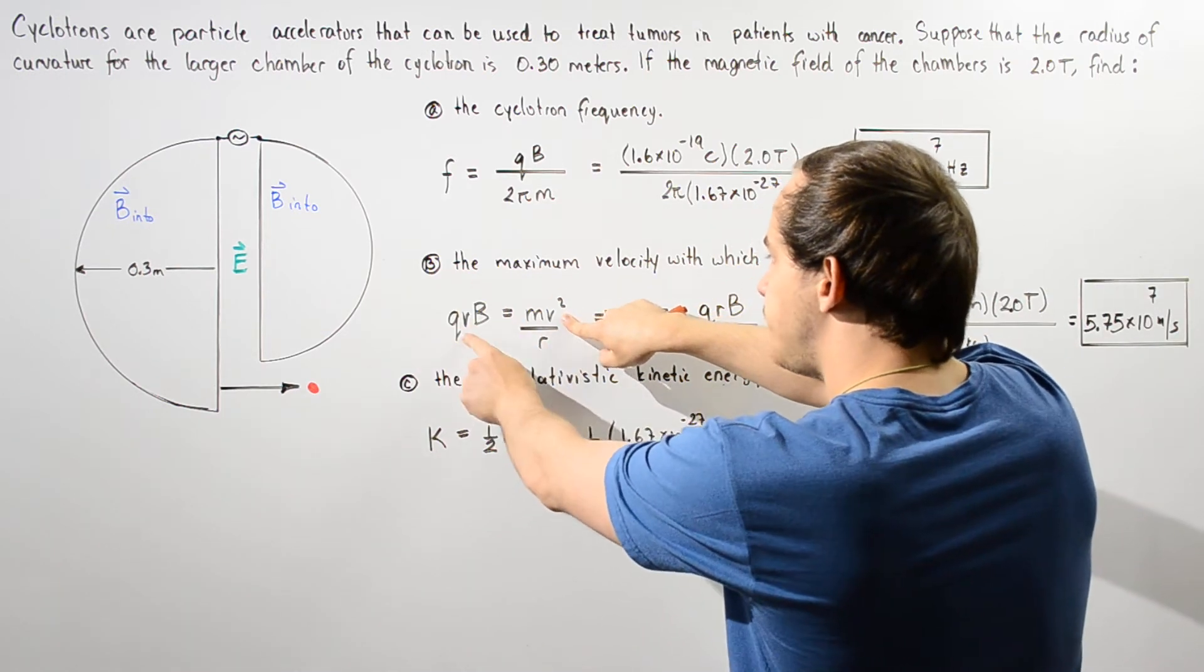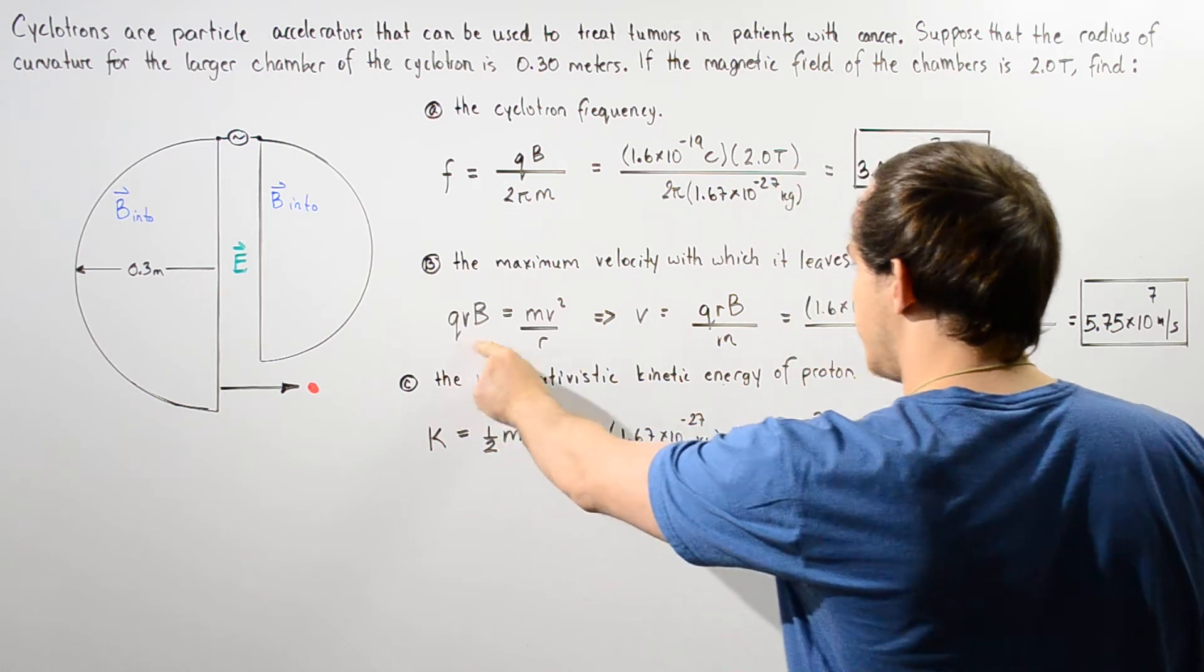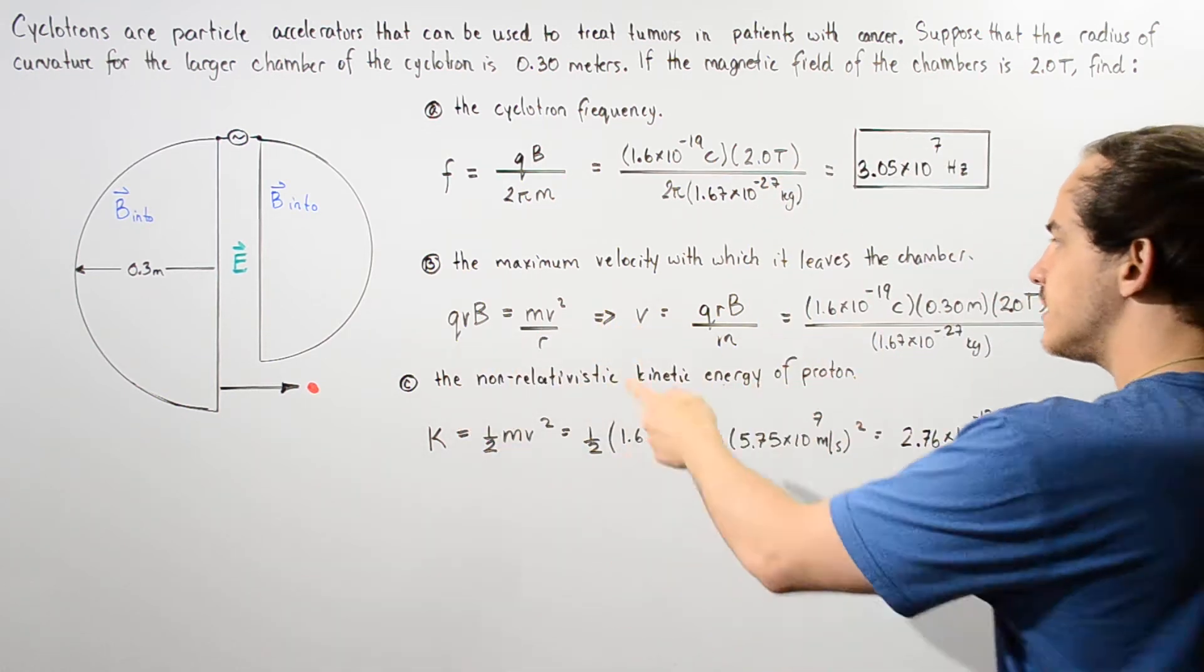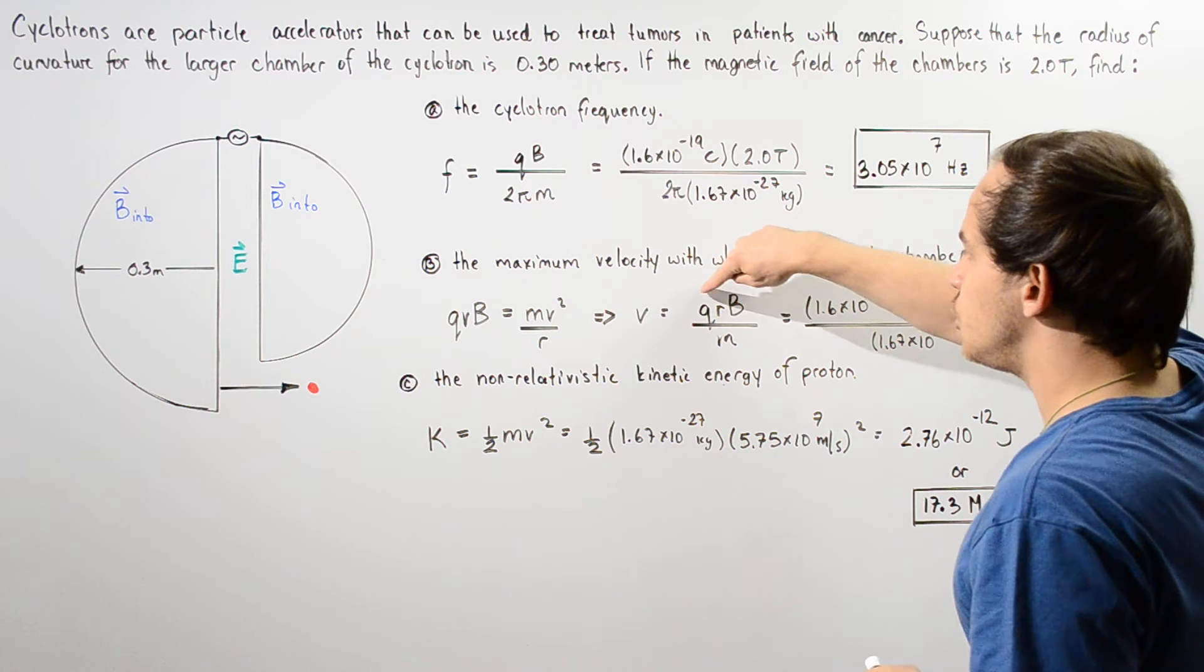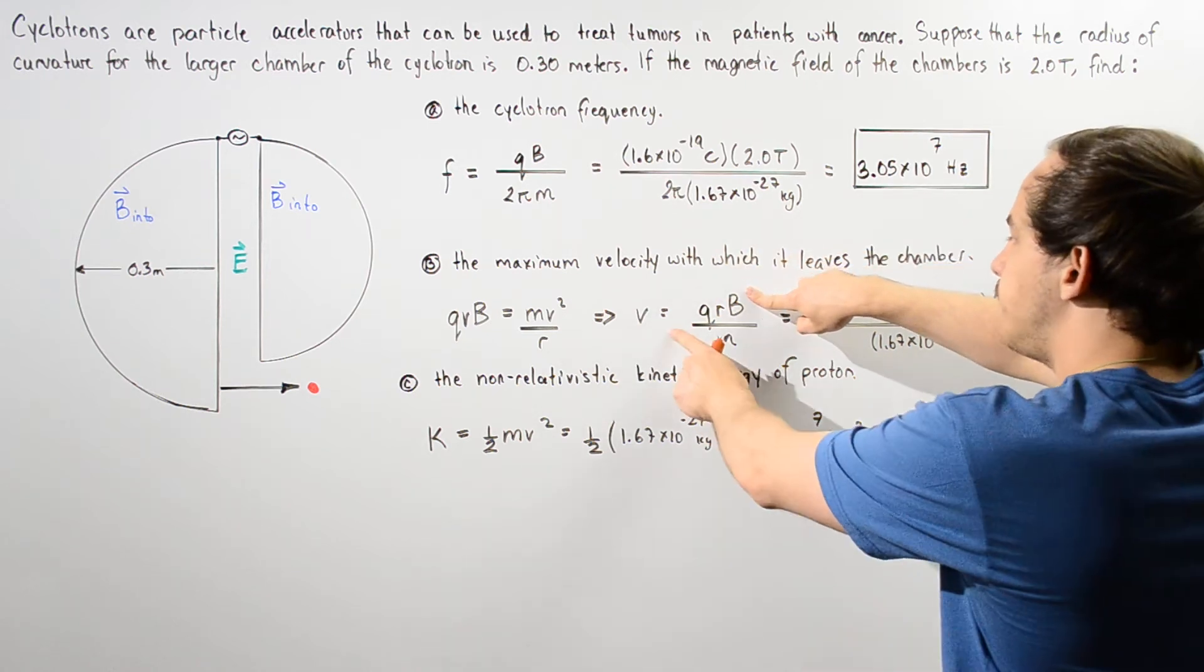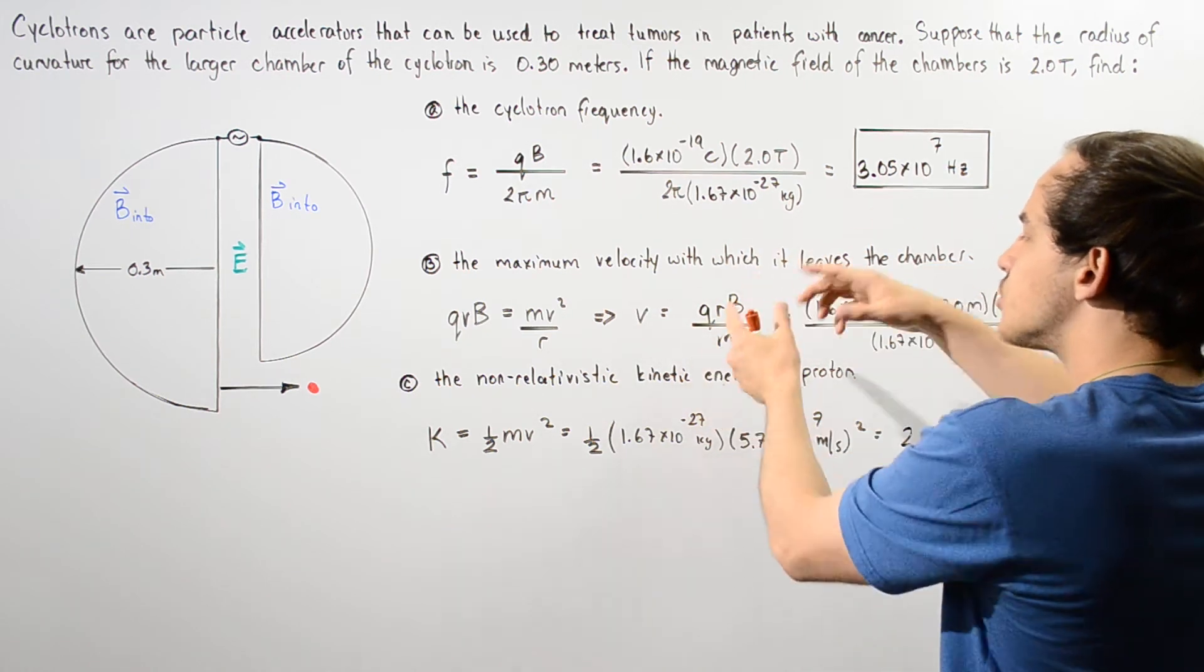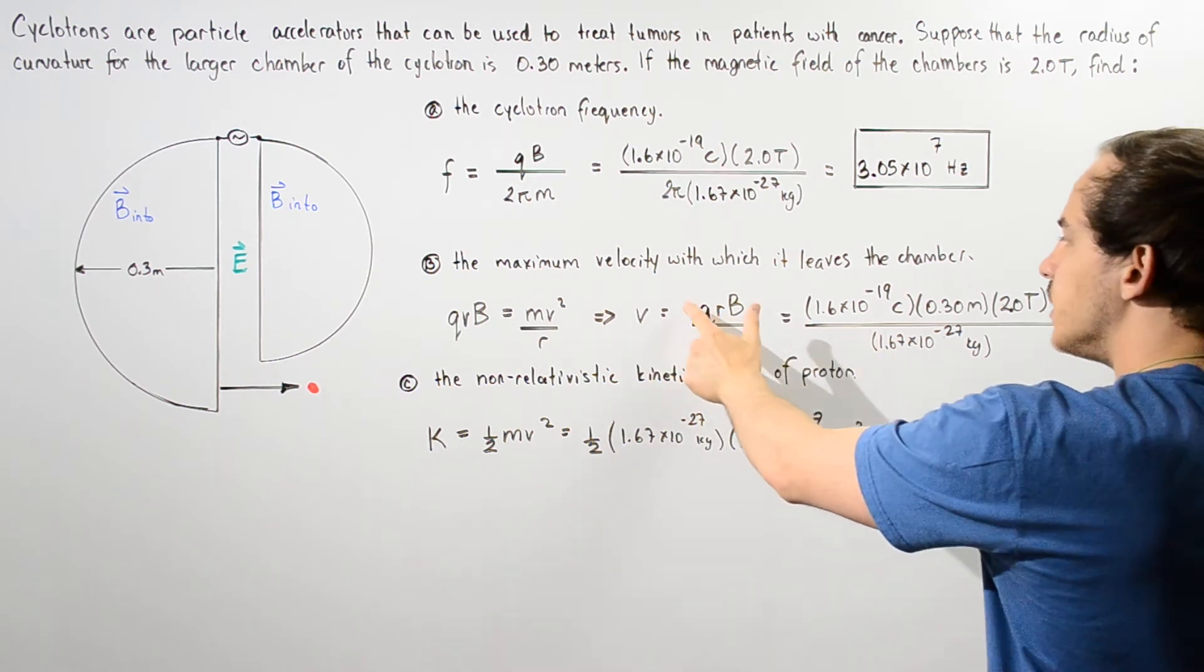So we can cross out one of these v's and then solve for the velocity. The non-relativistic velocity is equal to qrB divided by m.